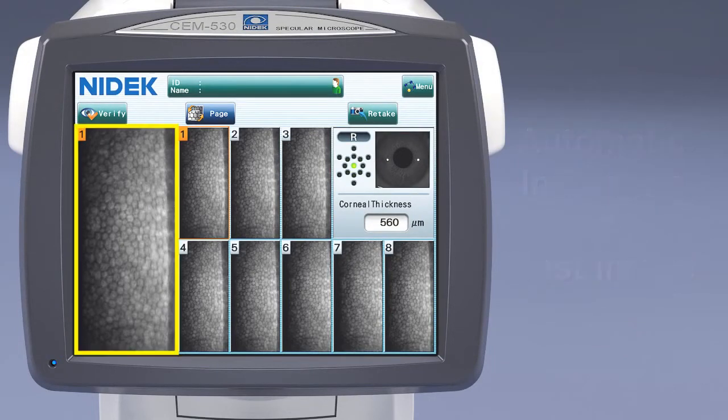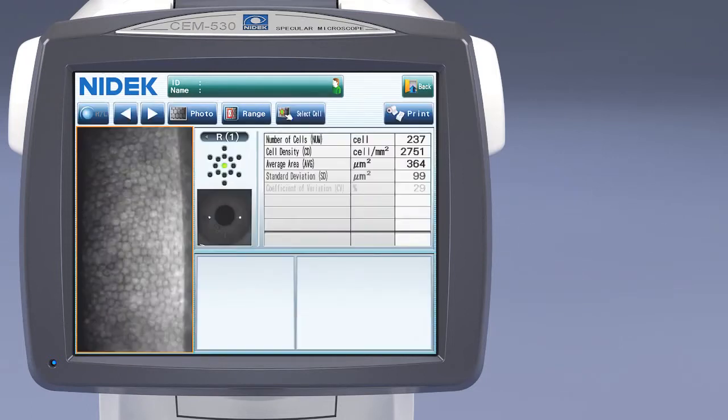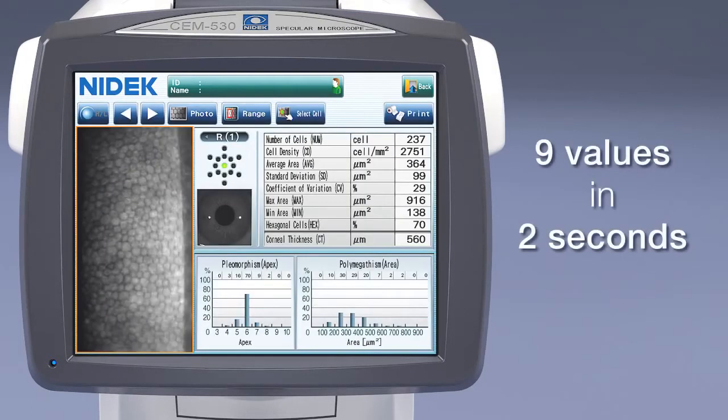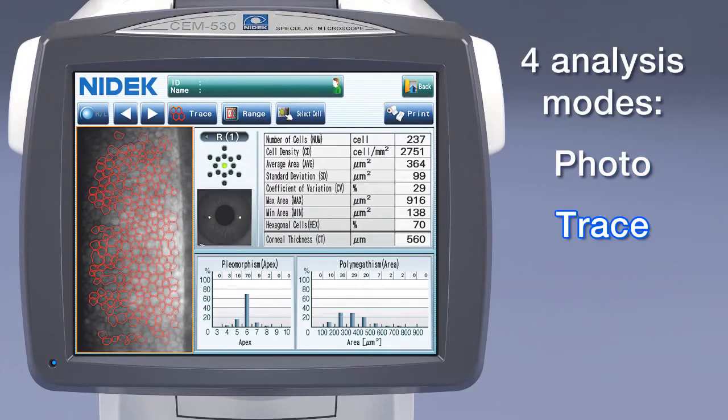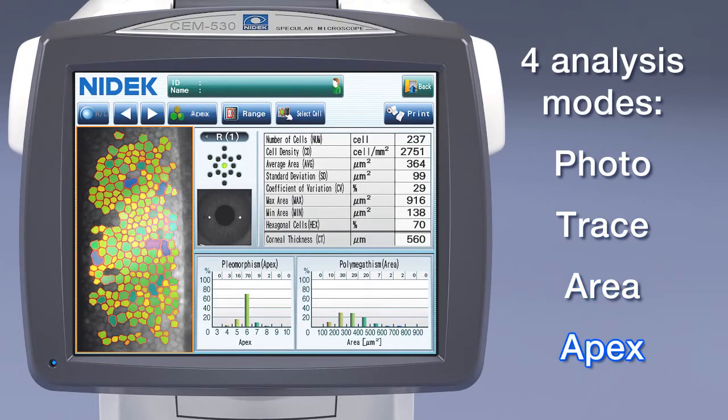Once an image is selected, the CEM530 automatically performs a complete analysis in just 2 seconds that provides 9 essential values. The analysis screen allows for visualization of the endothelial cells in 4 modes, including photo, trace, area, and apex, for cell observation and evaluation, and to determine if cells are normal or stressed.